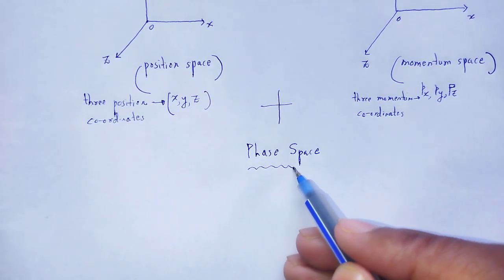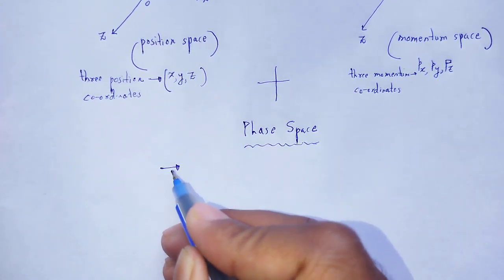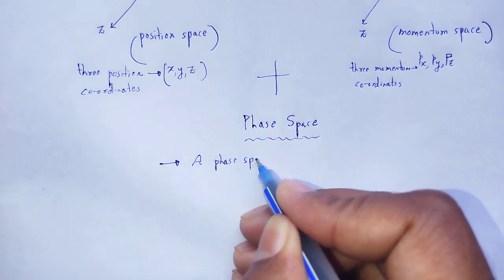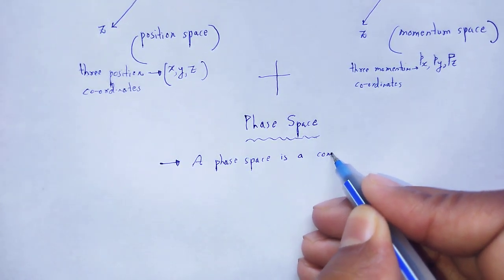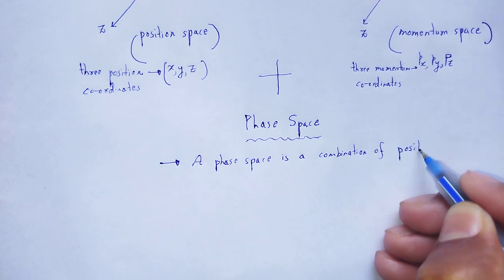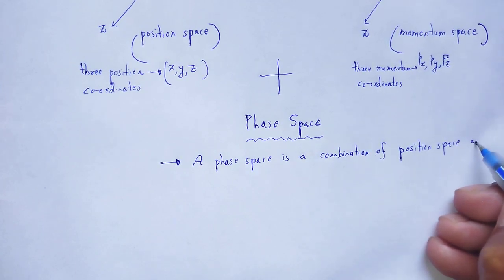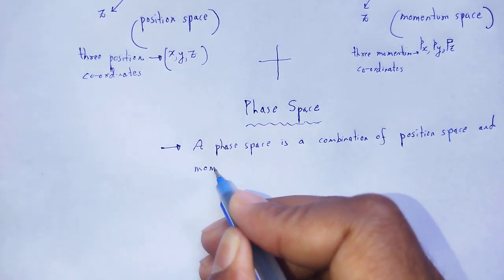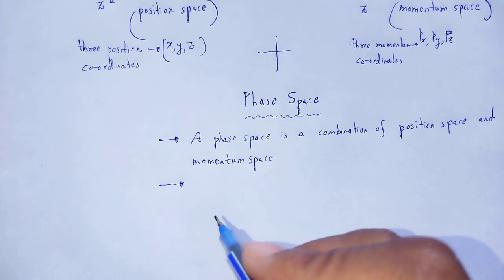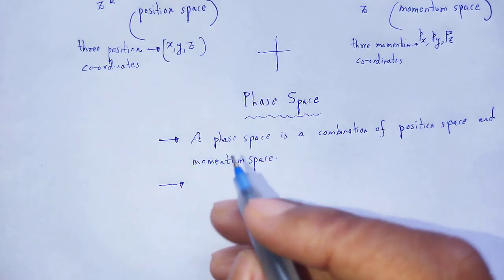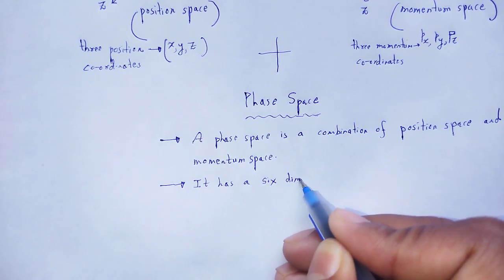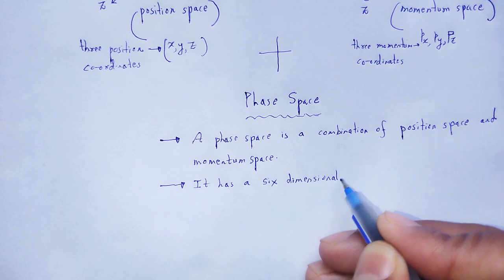How do we define phase space? A phase space is a combination of position space and momentum space. It has a six-dimensional space.